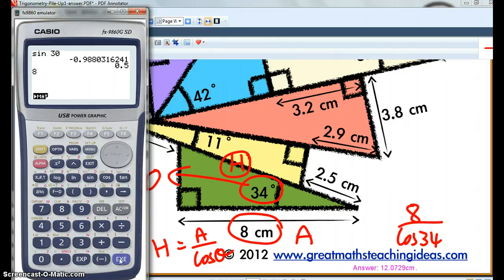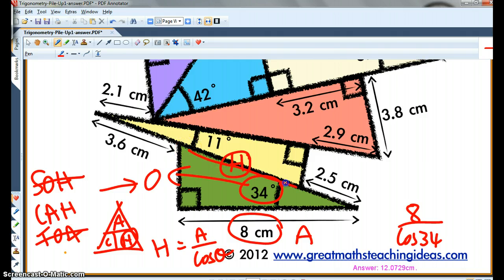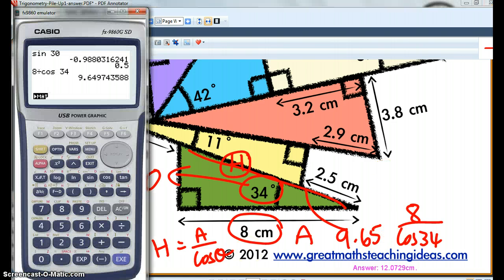So 8 divided by cos 34. So that's 9.645. So this one here is 9.65. Now we need to take off 2.5. So we've got 7.15 here.